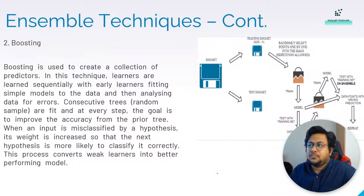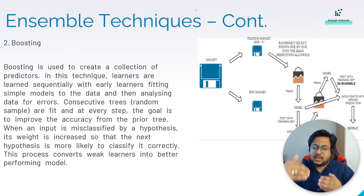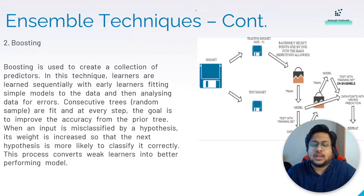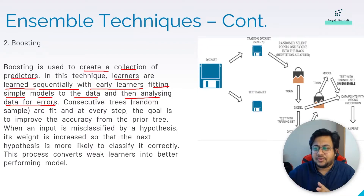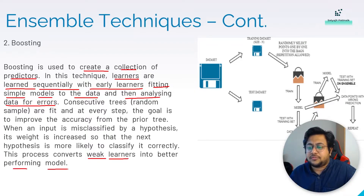Boosting is also an ensemble technique but the training process is different. Boosting creates a collection of predictors where learners are learned sequentially. Early learners fit simple models to data, then analyze errors. Consecutive trees are fit and at every step the goal is to improve accuracy from the prior tree. When an input is misclassified, its weight is increased so the next hypothesis is more likely to classify it correctly — converting weak learners into better-performing models.